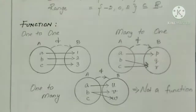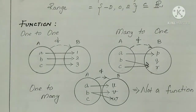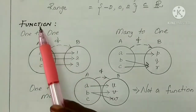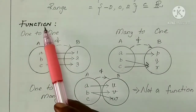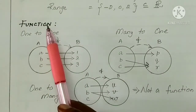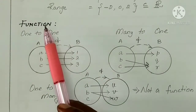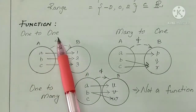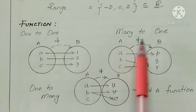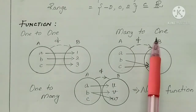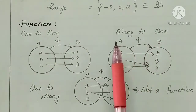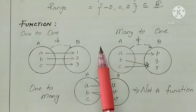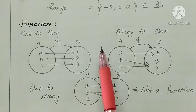Now, to explain how to show a function. If you want to define a function, we provide two conditions. First condition: one-to-one condition. Second condition: every element in the domain must map to an element in the co-domain.